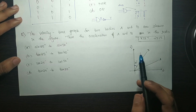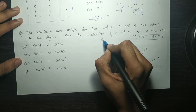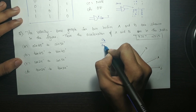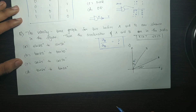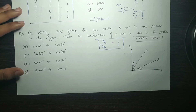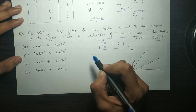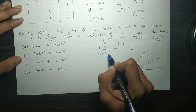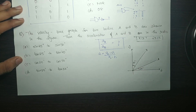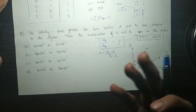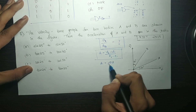The velocity-time graph for two bodies A and B are shown. Then the acceleration of A and B are in what ratio? We have a VT graph. The slope of the VT graph gives acceleration. Acceleration is equal to change in velocity divided by change in time. So A equals delta V divided by delta t.